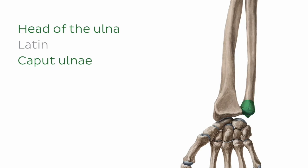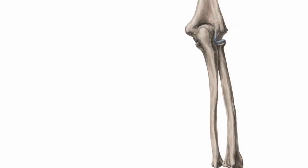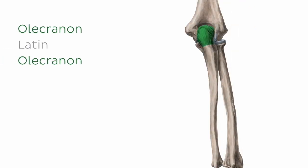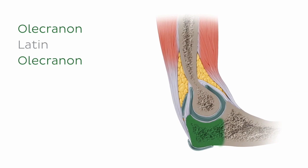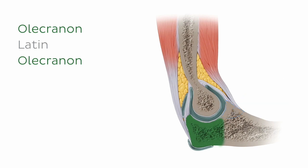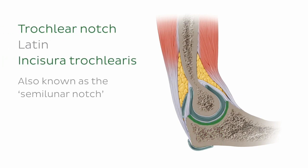Let's turn our attention to the posterior aspect of the ulna, beginning once again at the proximal end, which is dominated by this large rounded projection of bone just here. This is known as the olecranon, and it forms the posterior part of the elbow joint. To get a better idea of the shape of this process, let's briefly look at its profile and cross-section. As you can see, the olecranon and the coronoid process together form a cup-shaped fossa which accommodates the trochlea of the humerus, forming the elbow joint. This depression is known as the trochlear notch, or semilunar notch, otherwise known as the greater sigmoid cavity of the ulna.